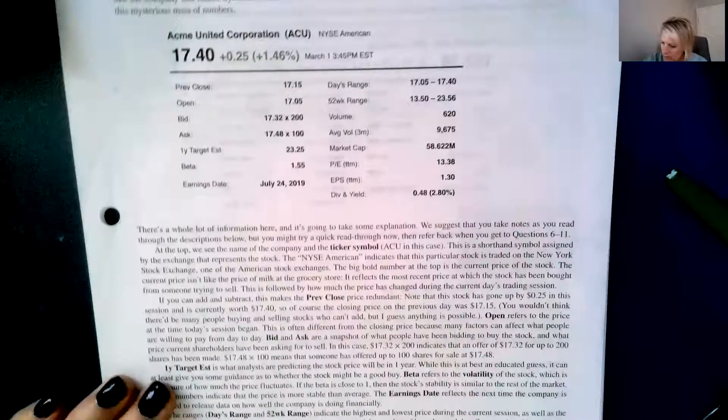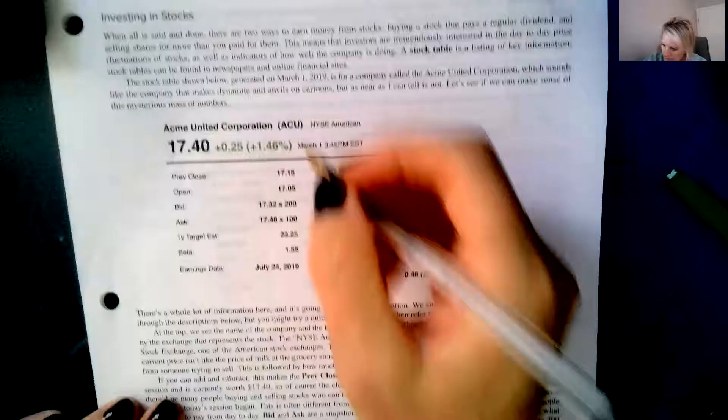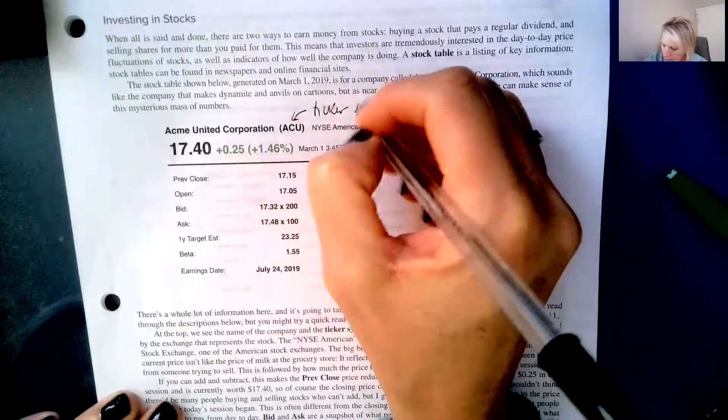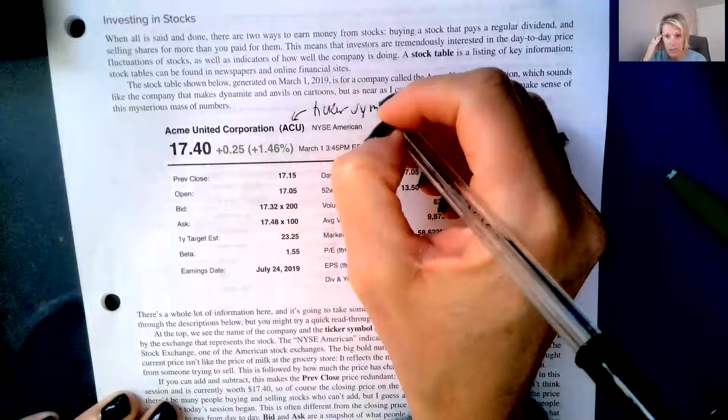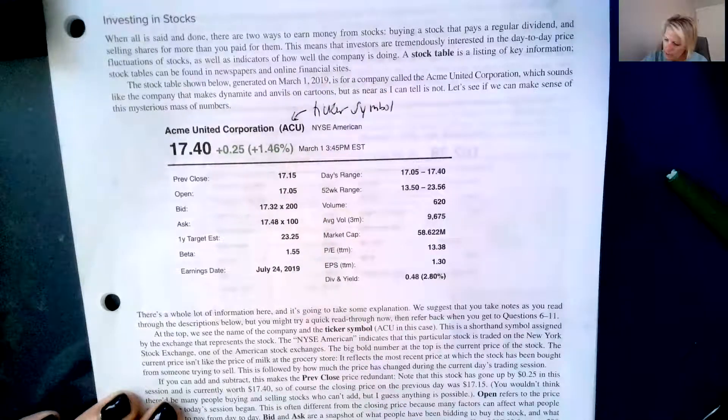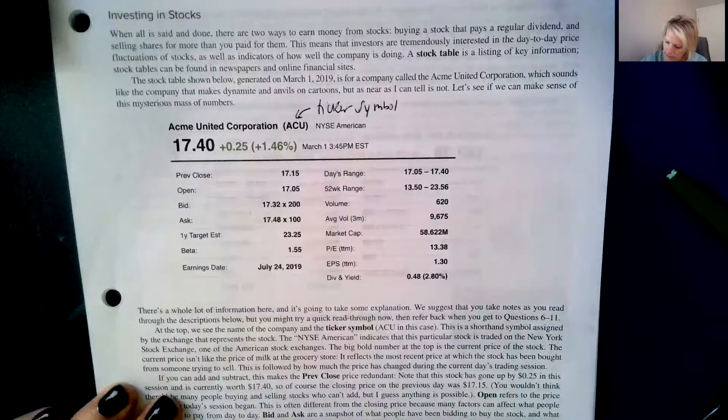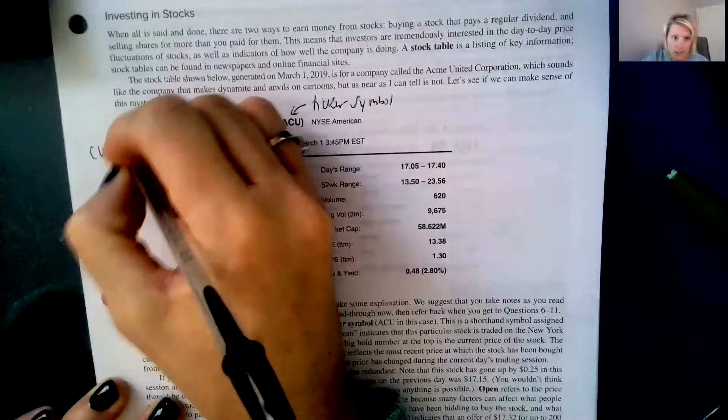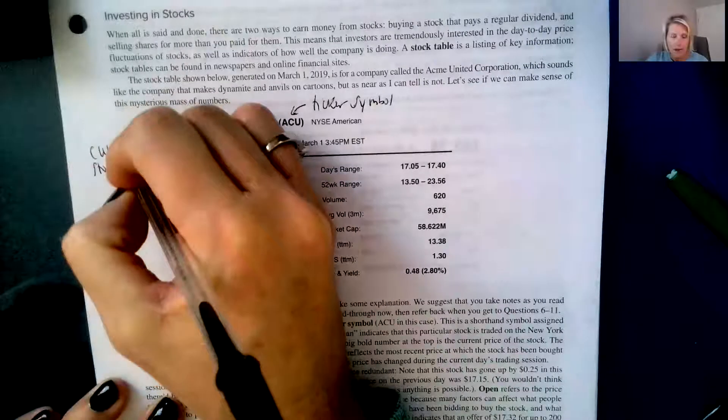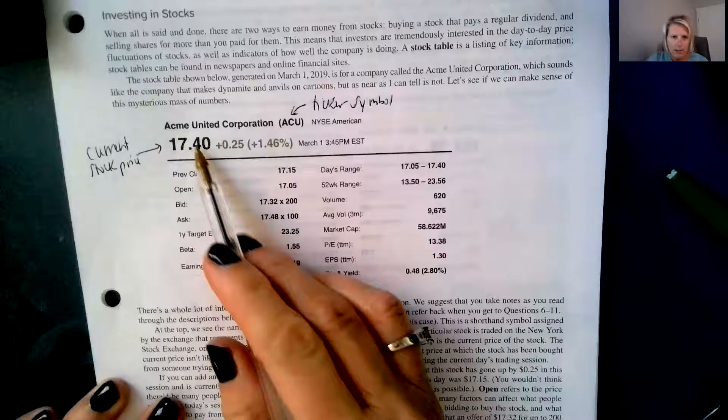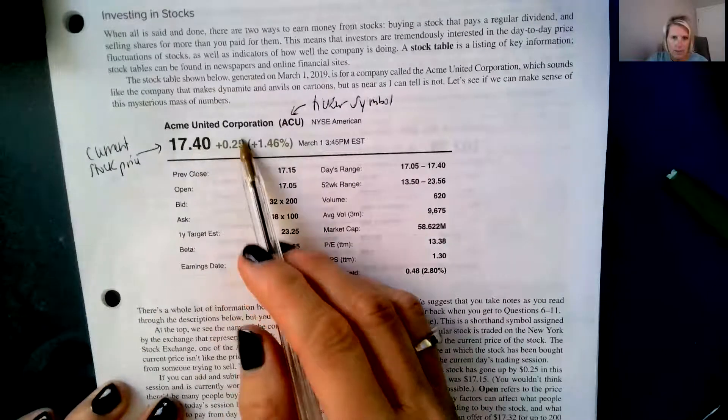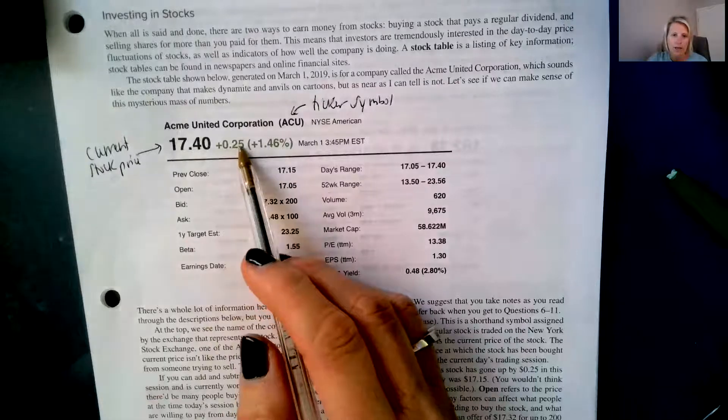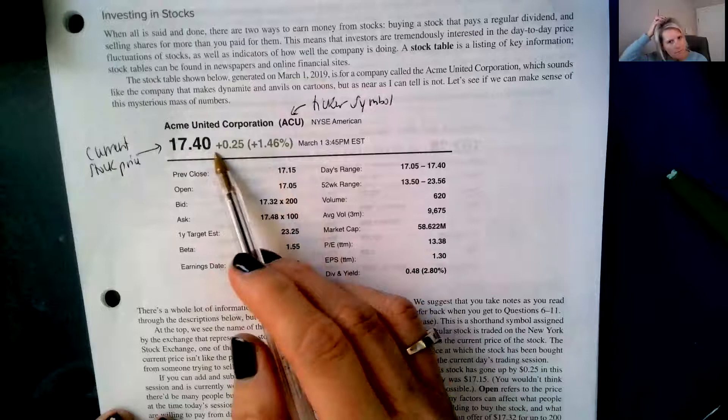So this is the ticker symbol. And you found your ticker symbol for whatever company you were investing in before. This is the current stock price. And it changes all the time right there. This green 0.25 means it's up 25 cents right now. And it's green because it's up. If it was red, it means they were down and it would be negative. And this is the percentage that it's up.